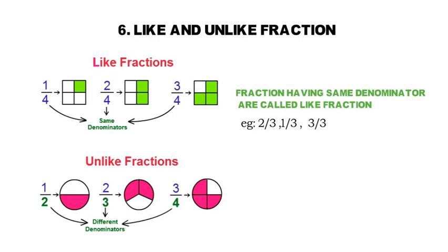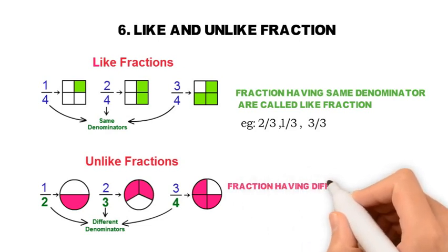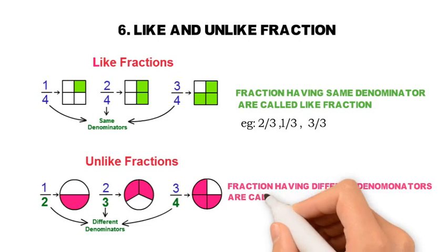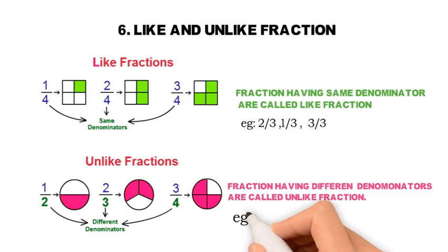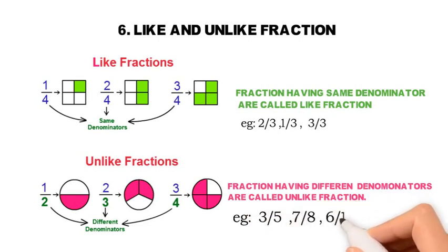Now unlike fractions. Here three circles are shown: the first divided into 2 parts, the second into 3 parts, and the third into 4 parts. The fractions are 1 upon 2, 2 upon 3, and 3 upon 4 — the denominators are all different. So two or more fractions having different denominators are called unlike fractions.